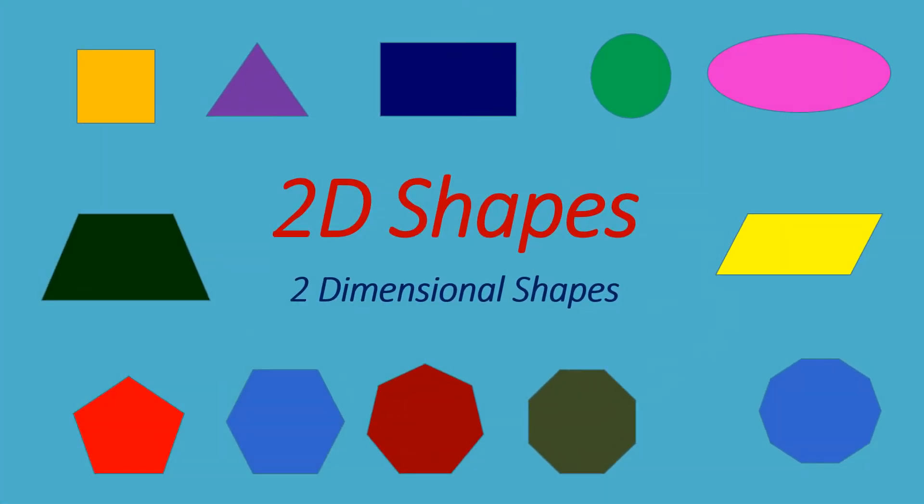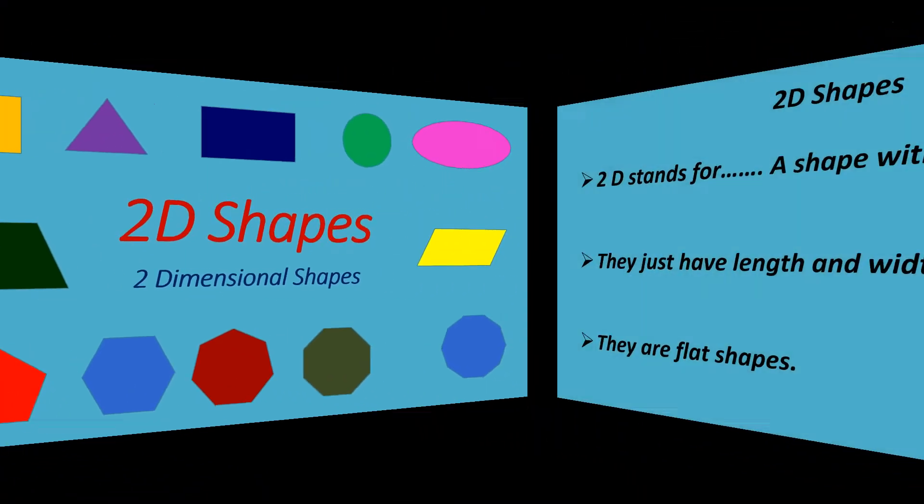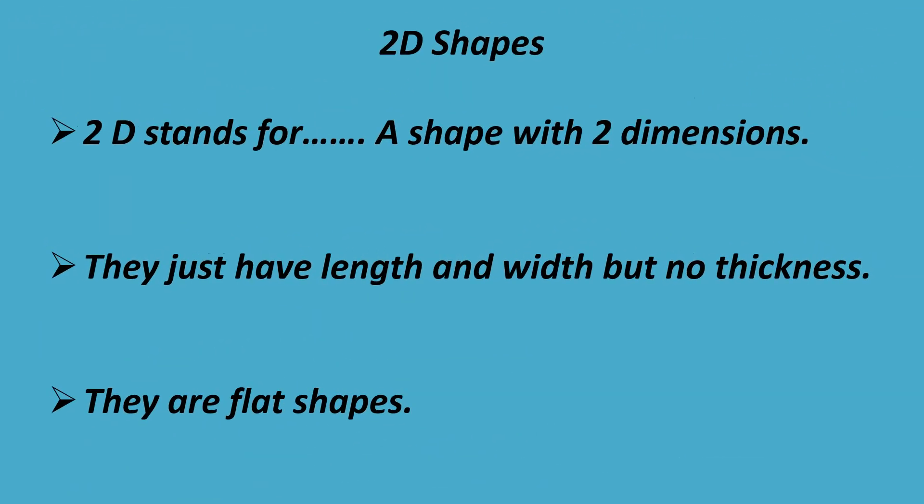2D shapes — two-dimensional shapes. 2D stands for a shape with two dimensions. They just have length and width, but no thickness. They are flat shapes.